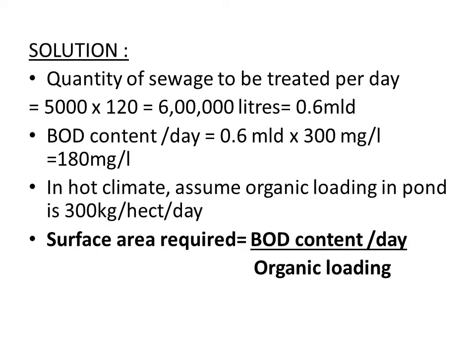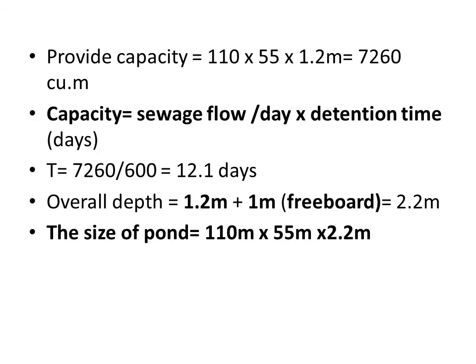That is 6 into 10 raised to 5 liters. If you want to convert it into meter cube, divide by 1000. So here we will be getting that quantity of sewage waste. If you want to convert it in terms of meters, we will be getting around 600 meter cube. So the sewage waste flow in meter cube will be 600.